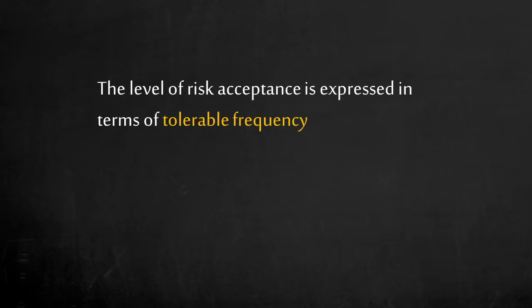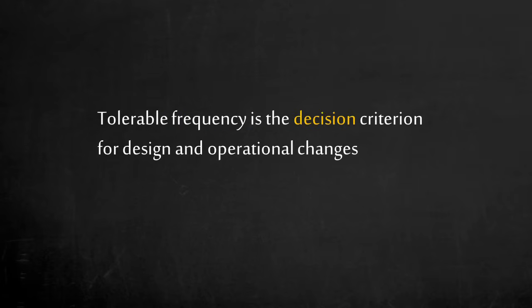Let's think about how to communicate acceptable risk. The level of risk acceptance is expressed in terms of tolerable frequency, which is the maximum number of expected events per year that is considered practicable. Sometimes this can be expressed in terms of probability. Tolerable frequency is the decision criterion for design and operational changes. This is a target for risk tolerance set by a company, often to align with society expectations to drive consistent decisions.